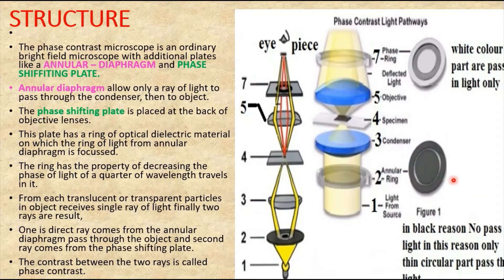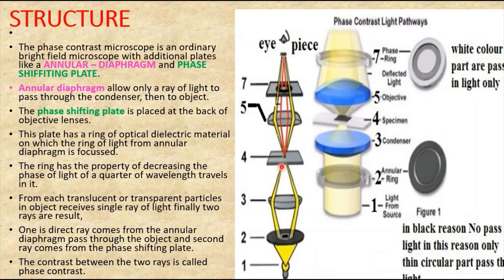The annular diaphragm is attached in place of the iris diaphragm to the ordinary condenser. This attachment allows only a ring of light to pass to the condenser and then to the object. Here you can see a ring of light passing to the condenser and then to the specimen. Each objective requires a different size of annulus according to its numerical aperture.